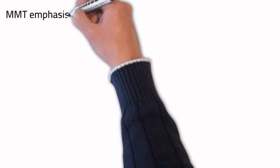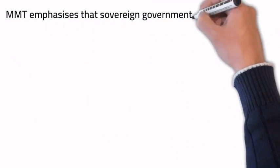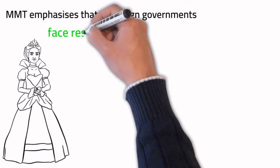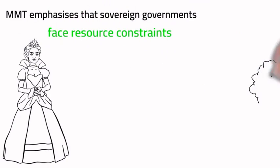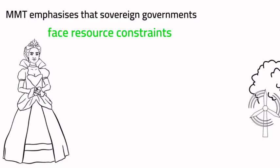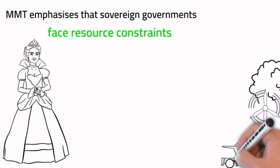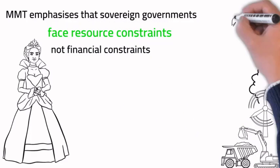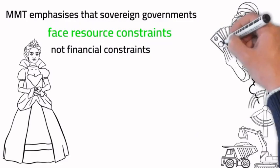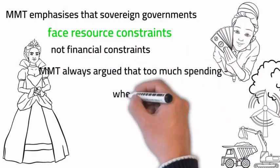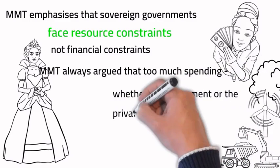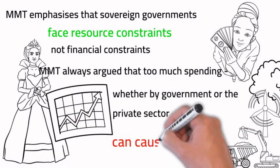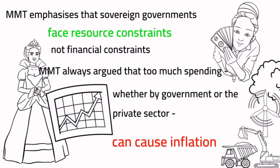MMT emphasizes that sovereign governments face resource constraints, not financial constraints. MMT has always argued that too much spending, whether by the government or the private sector, can cause inflation.